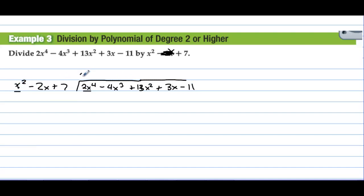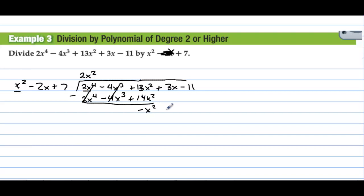What do we take times x² to get 2x⁴? We multiply by 2x². So we have 2x⁴, then 2x² times negative 2x is negative 4x³, and 2x² times 7 gives us plus 14x². We always subtract — these go to 0, so 13 minus 14 is negative x². Then we have plus 3x minus 11. We take three terms at a time because there are 3 terms in the divisor. What do we take times x² to get negative x²? Negative 1. So negative x² plus 2x minus 7. Subtracting: 3 minus 2 is 1, so we have x. Negative 11 minus negative 7 gives us minus 4.